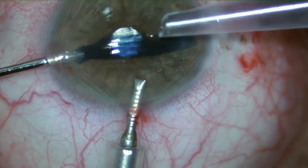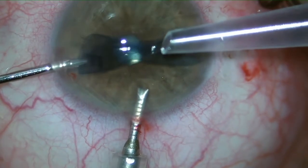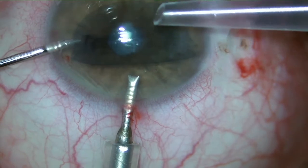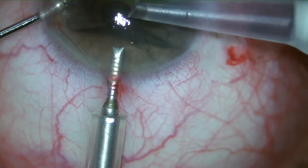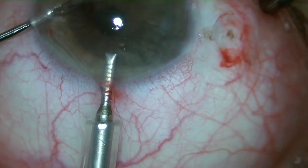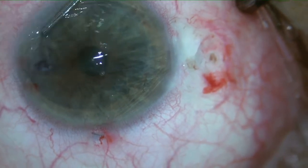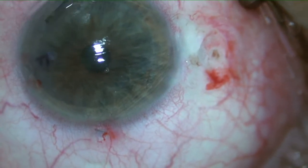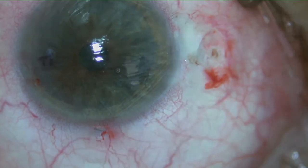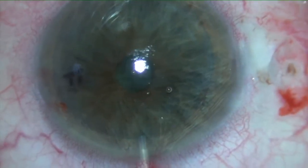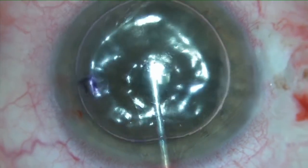While holding the graft with the forceps, unfolding takes place spontaneously and minimal tapping on the cornea is required to complete the maneuver. The graft is centered, acting on the recipient cornea from outside. Finally, air is injected to attach it to the posterior corneal surface in the right position.